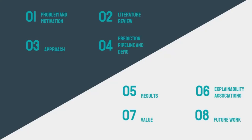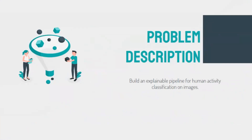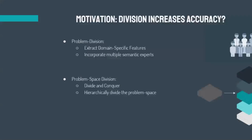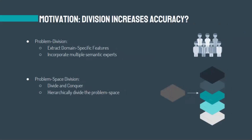The problem description for our project is to build a pipeline that takes a photo of a person doing a certain activity and correctly classifies the type of activity this person is doing, while also providing some explanation of how or why the pipeline reached this conclusion. The motivation of our solution relied on the following question: does dividing or simplifying the problem for a pipeline improve its accuracy?